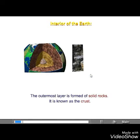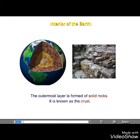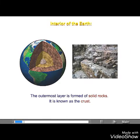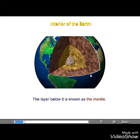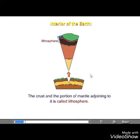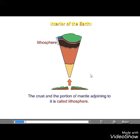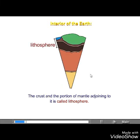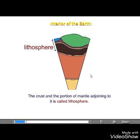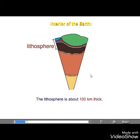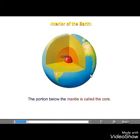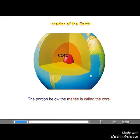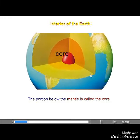The outermost layer is formed of solid rocks and is known as the crust. The layer below it is known as the mantle. The crust and the portion of mantle adjoining to it is called the lithosphere. The lithosphere is about 100 km thick. The portion below the mantle is called the core.